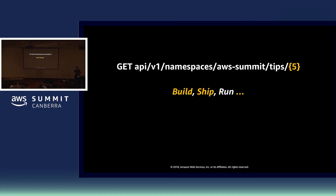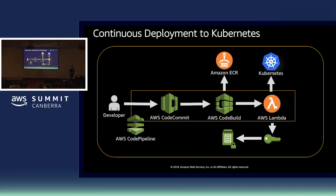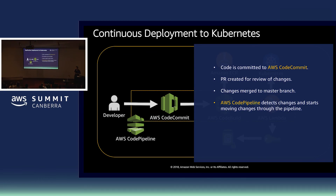Last tip, number five: build, ship, and run. Customers are using Kubernetes to deploy, manage, and scale their applications. We need a mechanism to reliably deploy applications, and Kubernetes has capabilities that help with that. There are lots of tools that can help achieve application deployment within your Kubernetes clusters. What I'm sharing here is a reference architecture that uses the AWS code deployment and development services to create container images and ship those images into a Kubernetes cluster.